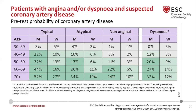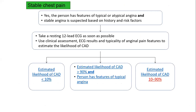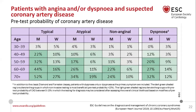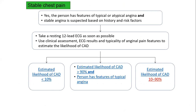This table is from the European Society of Cardiology. In our case — typical angina, age 75, female sex, normal ECG — it falls into the 10 to 90 percent likelihood category of coronary artery disease.